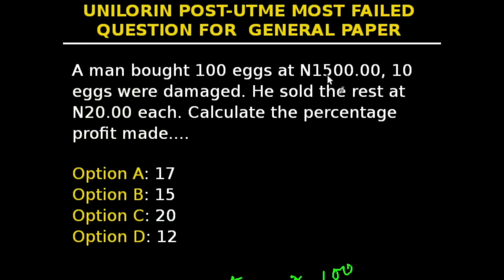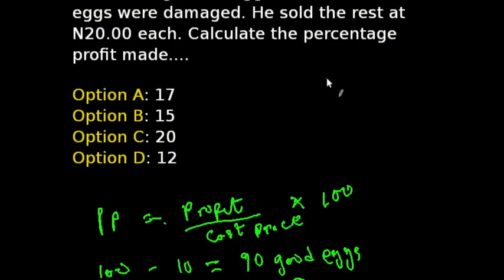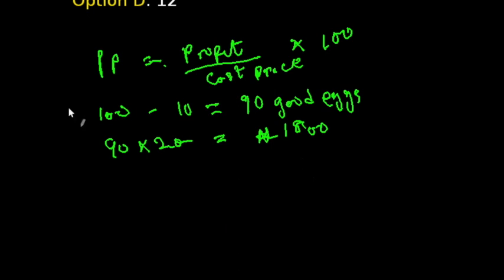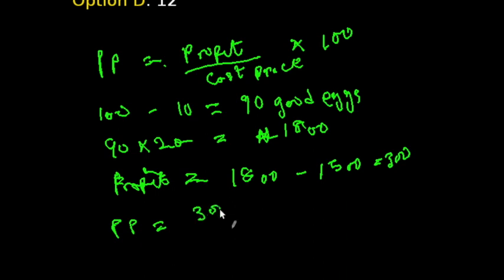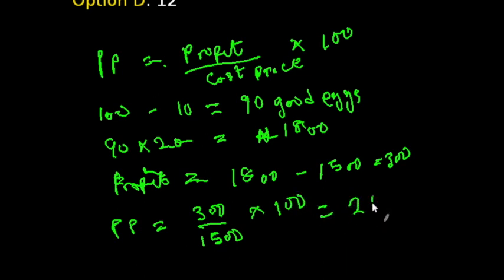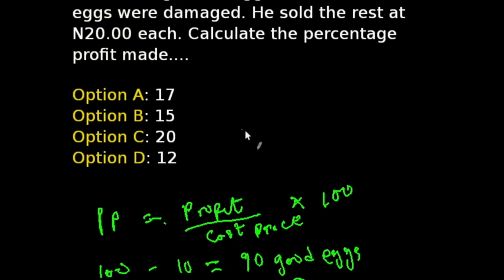Now we calculate the profit. He bought the eggs for 1,500 Naira and sold them for 1,800 Naira, so the profit is 1,800 minus 1,500, which equals 300 Naira. Using our formula: PP = 300 (profit) over 1,500 (cost price), times 100. This gives us 20%. So the answer is 20%, which is option C.